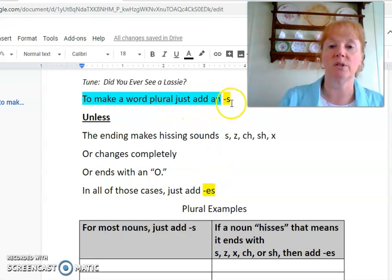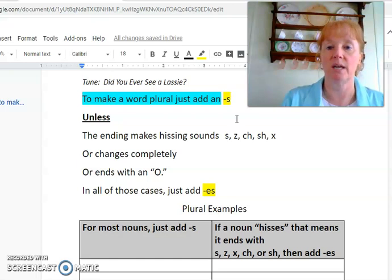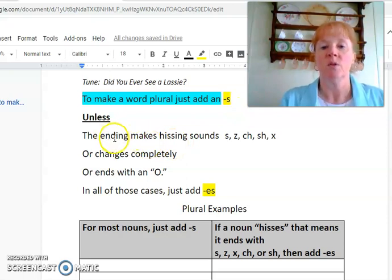Okay, so to make a word plural, just add an S. This applies to most nouns. And this can be girl becomes girls, you just add an S. We'll write down some of these in a minute. But that is how you make most nouns plural, just add the S.